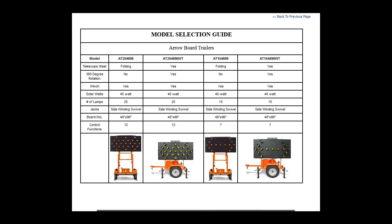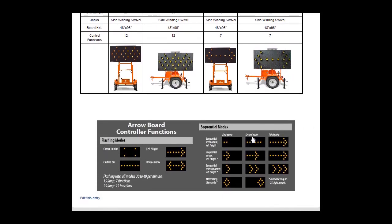With a 15-lamp or 7-function controller, an aero board can perform these functions: corner caution, caution bar, left or right arrow, double arrow, and sequential stem aero left or right.